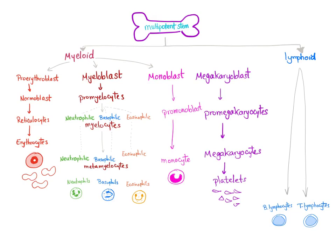The four myeloid precursors are: pro-erythroblast, myeloblast, monoblast, and megakaryocyte. What about the lymphoid stem cells? They will give B-lymphocytes and T-lymphocytes, and that's it.